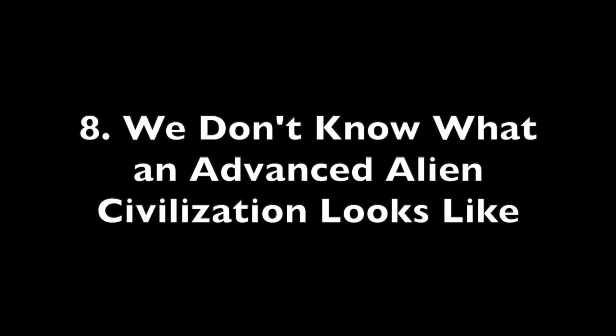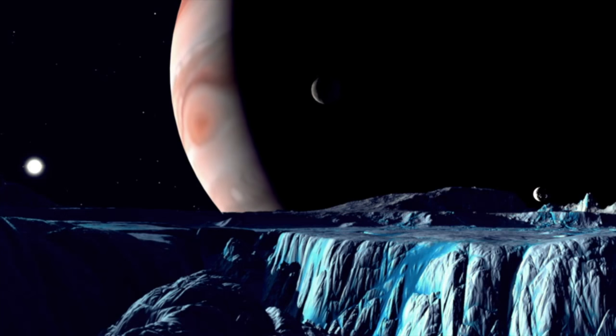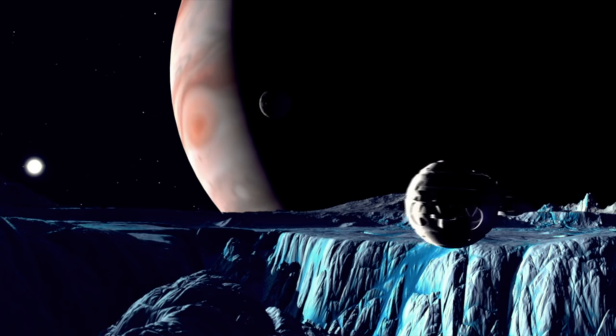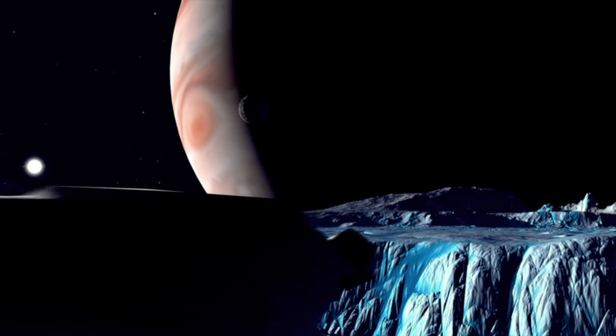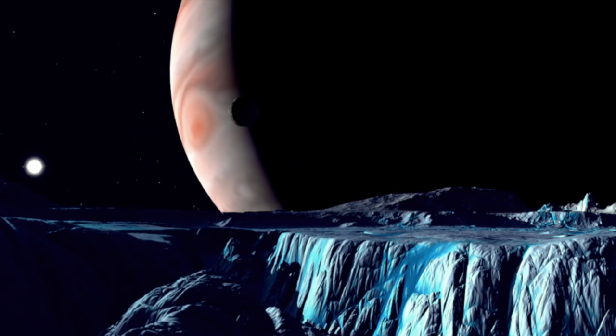Number 8. We don't know what an advanced alien civilization looks like. Life in the universe is difficult to detect. For the biosignatures, there are currently only a handful that we might use to try to find alien biology itself. But it's tricky, to say the least, because it's certainly possible to have a planet with a biosphere that is simply indetectable at a distance, especially if the biology of that life is significantly different from earth.